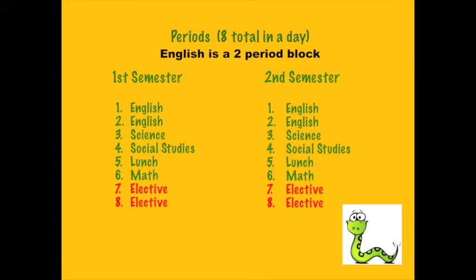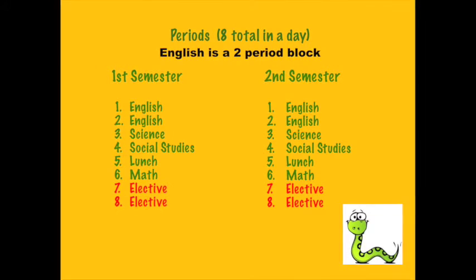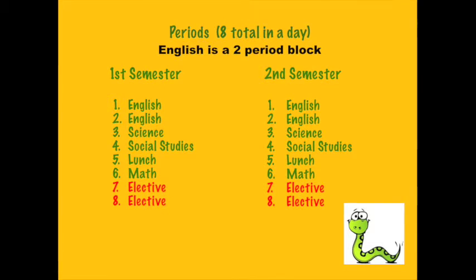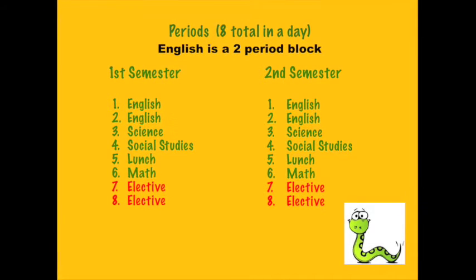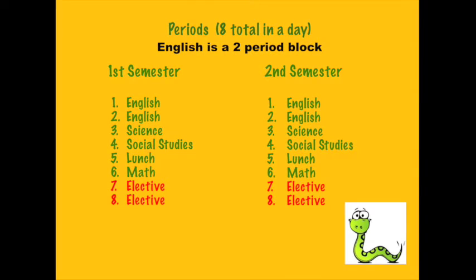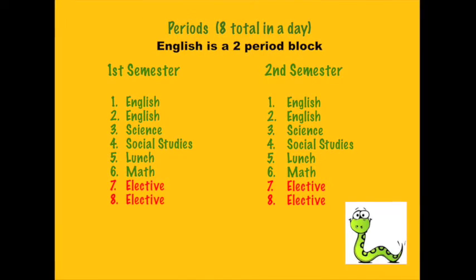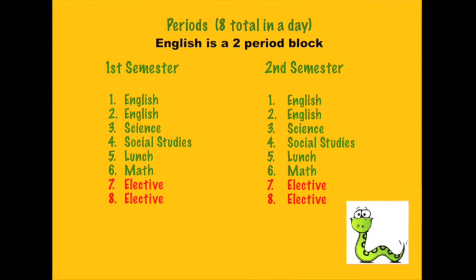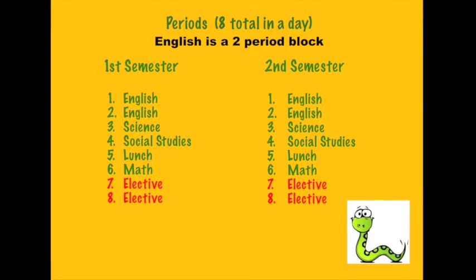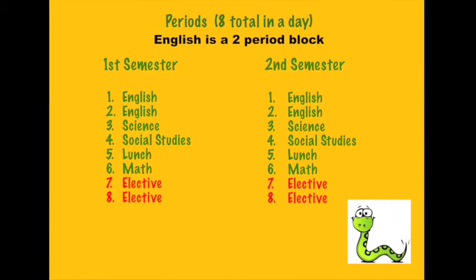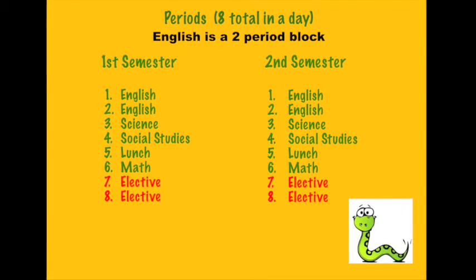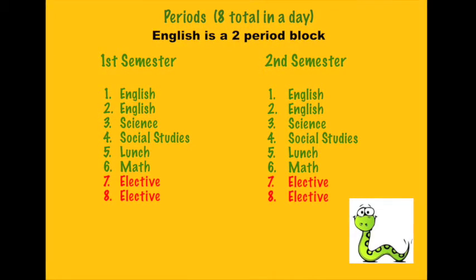Let's take a moment to look at how our day is set up at Desert Shadows Middle School. You have eight periods during the class day — seven are classes and one is lunch. You will be automatically scheduled for the core academic classes: English, science, social studies, and math, and of course lunch. Your teacher will place you in the right level of these classes. The other two classes are elective classes that you get to choose from the list on the card.